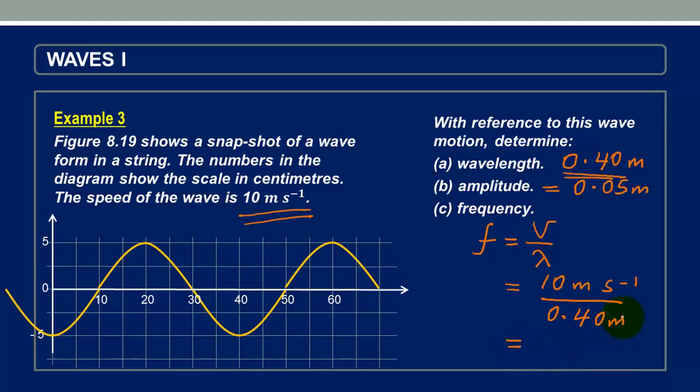And this will give us, of course these meters and these meters will cancel out. This will give us 100 divided by 4, because we can easily multiply this one by 10 so as to convert it into a simple number such as 4. And we do the same with the numerator. If we multiply the numerator by 10, we get 100. 100 divided by 4 is just 25 per second.